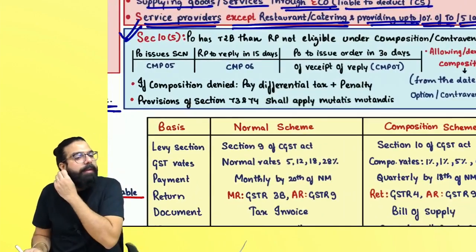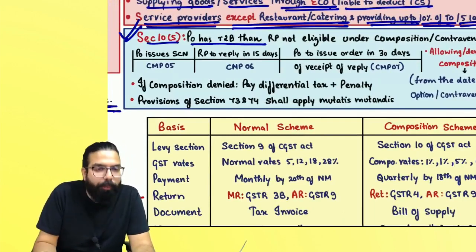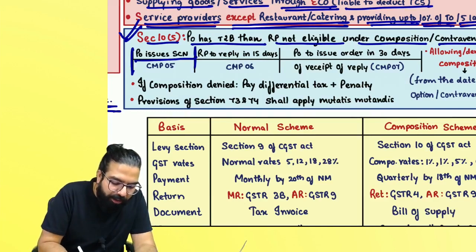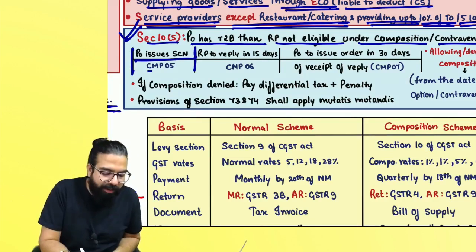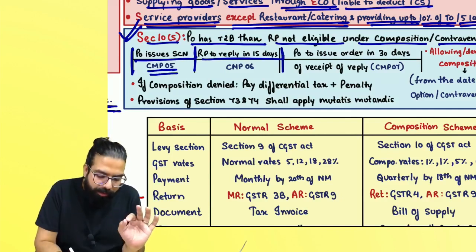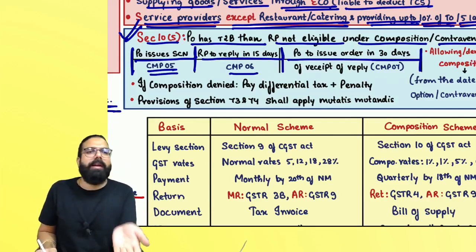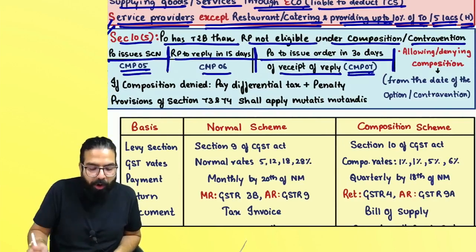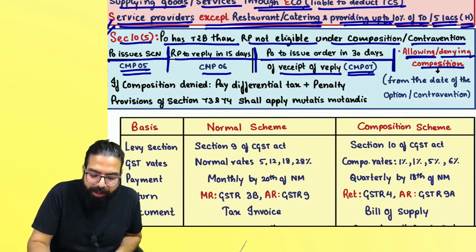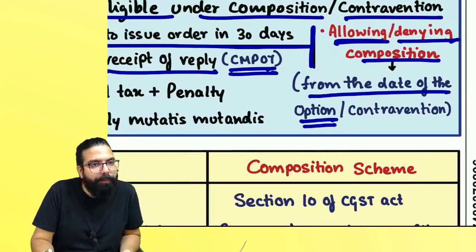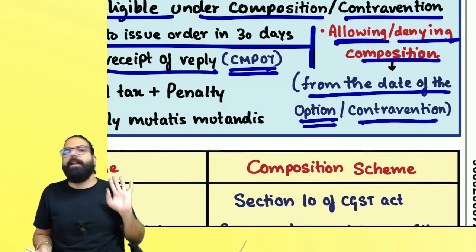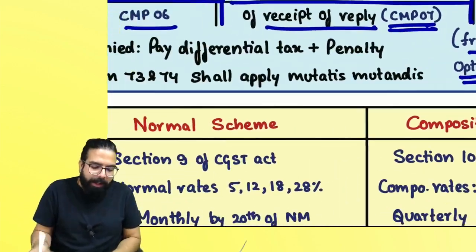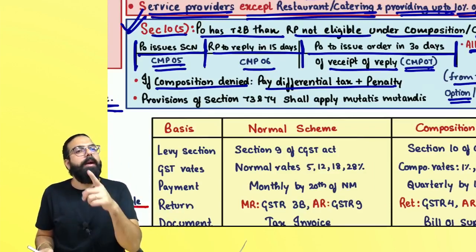Under Section 10(5): if the proper officer has reason to believe that a registered person is not eligible for composition or has done some contravention but is still continuing under composition scheme, the proper officer will issue a show cause notice in GST CMP-05. You have to reply to the officer in GST CMP-06. Within the next 30 days, the officer will either allow you to remain under composition or deny it. The order will be given in GST CMP-07.